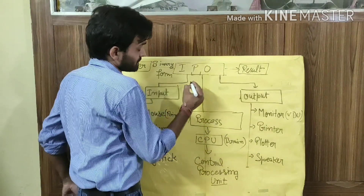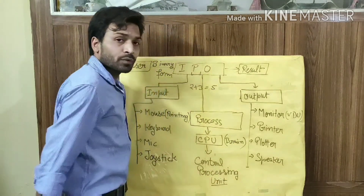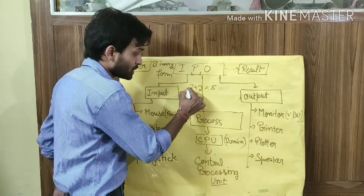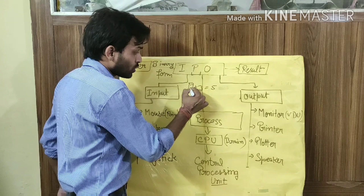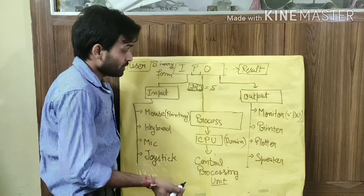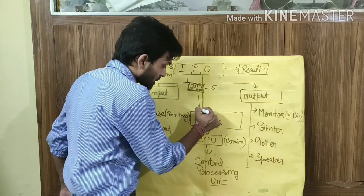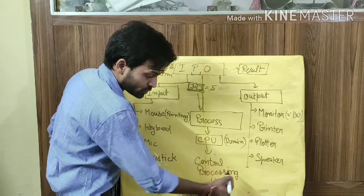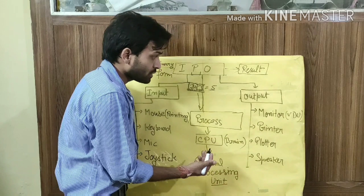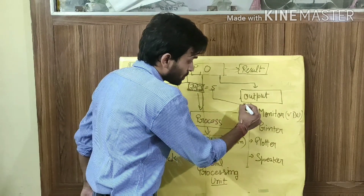In our last video we took a simple example: 2 plus 3 equals 5. Here 2 plus 3 is completely the input, and 5 is the result. The process of adding 2 plus 3 is done by the CPU — the central processing unit — also known as the brain of the computer. After that it produces a result.